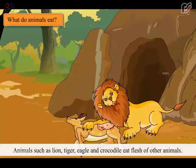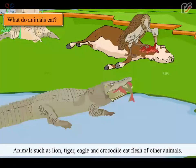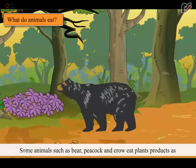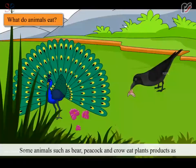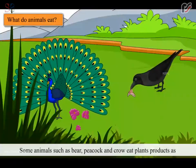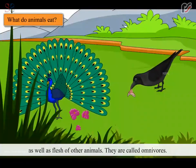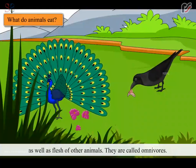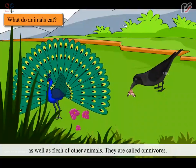Animals such as lion, tiger, eagle and crocodile eat the flesh of other animals. They are called carnivores. Some animals such as bear, peacock and crow eat plant products as well as flesh of other animals. They are called omnivores.